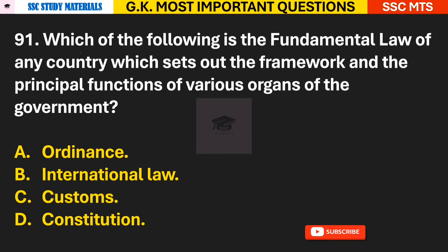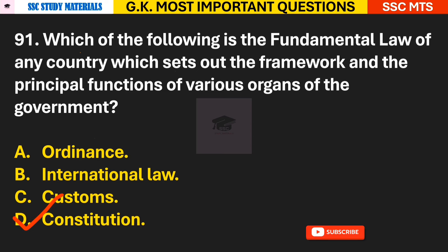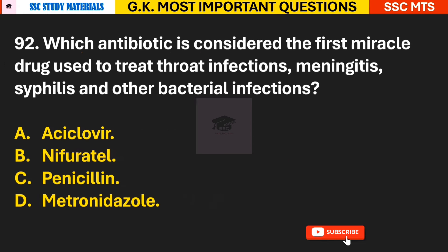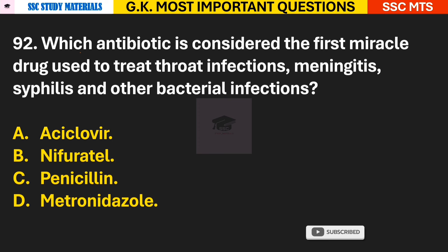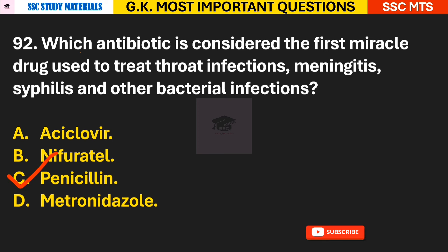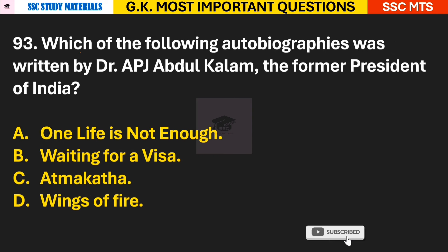Question 91: Which of the following is the fundamental law of any country which sets out the framework and the principal functions of various organs of the government? Answer D — the Constitution. Question 92: Which antibiotic is considered the first miracle drug, used to treat bacterial infections such as syphilis? Answer C — Penicillin.